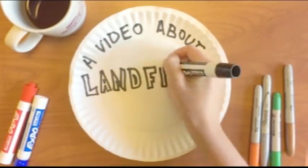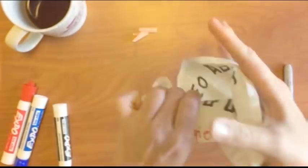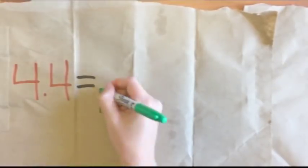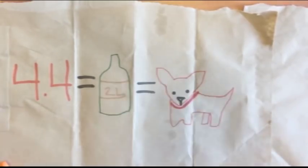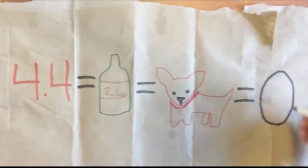A video about landfills. 4.4 pounds. Sounds pretty small, right? It's about the weight of a 2-liter bottle of soda, an average-sized chihuahua, or an ostrich egg.